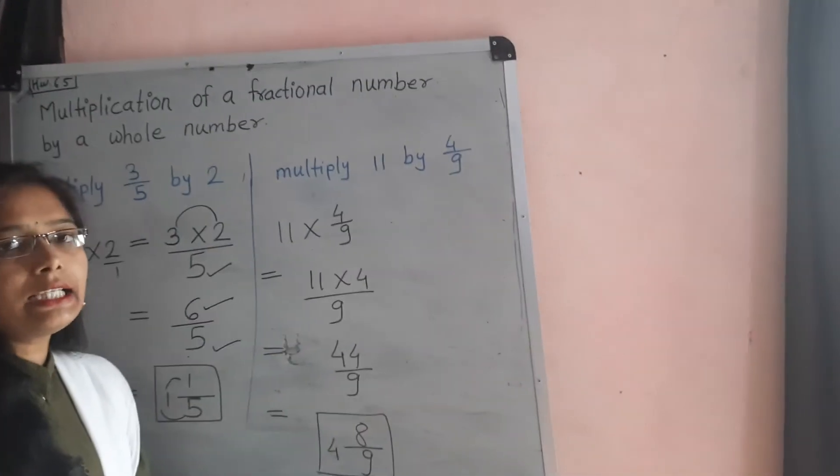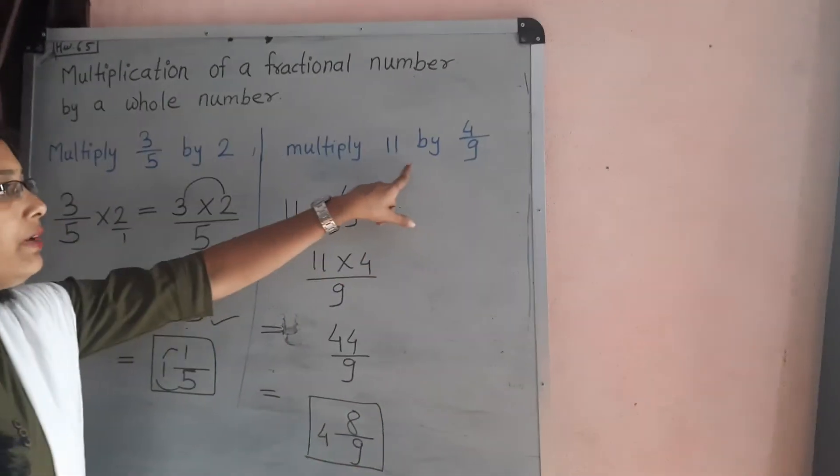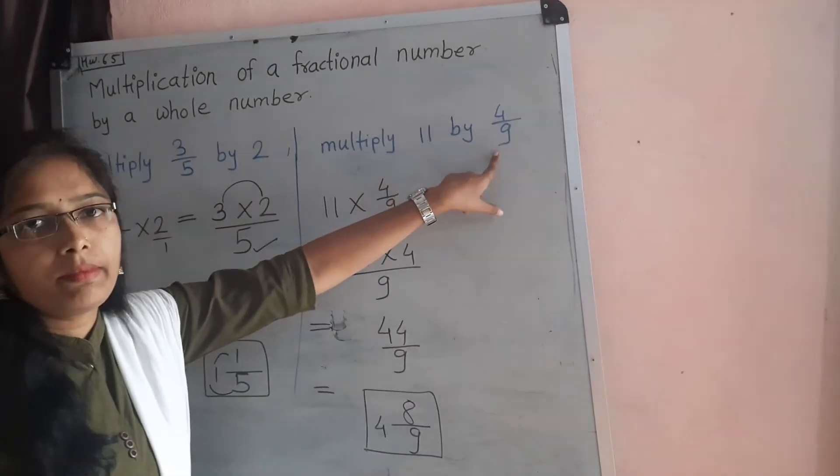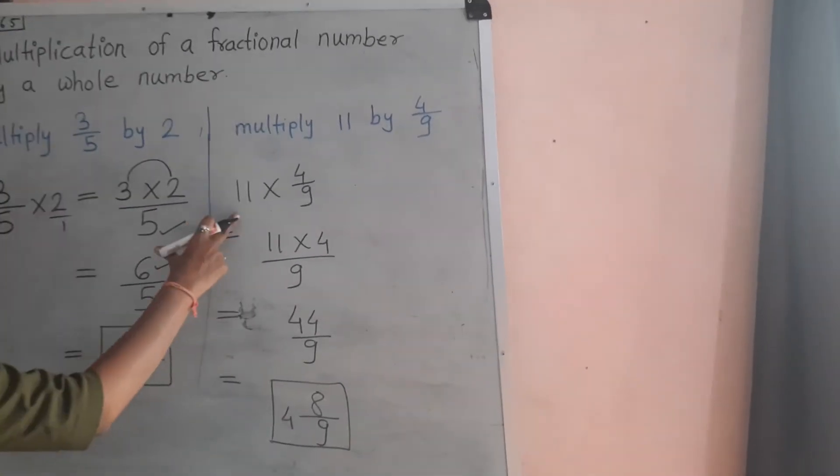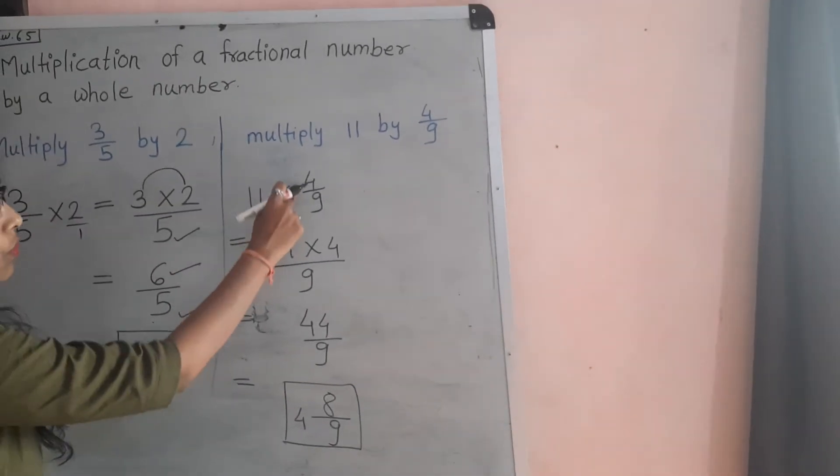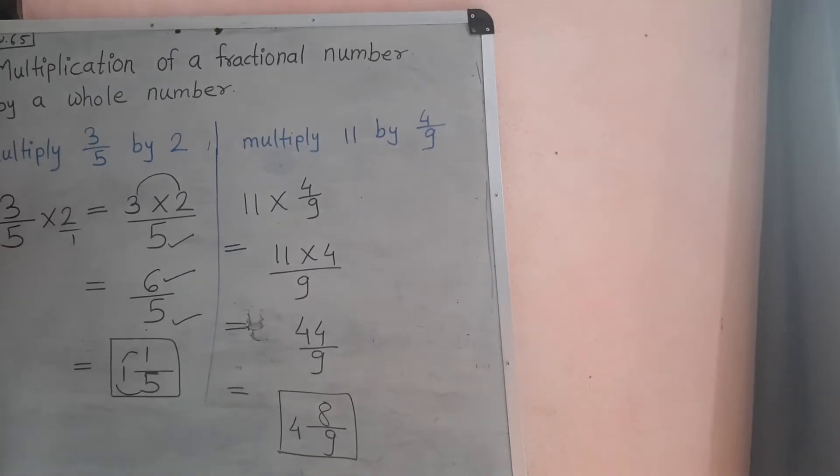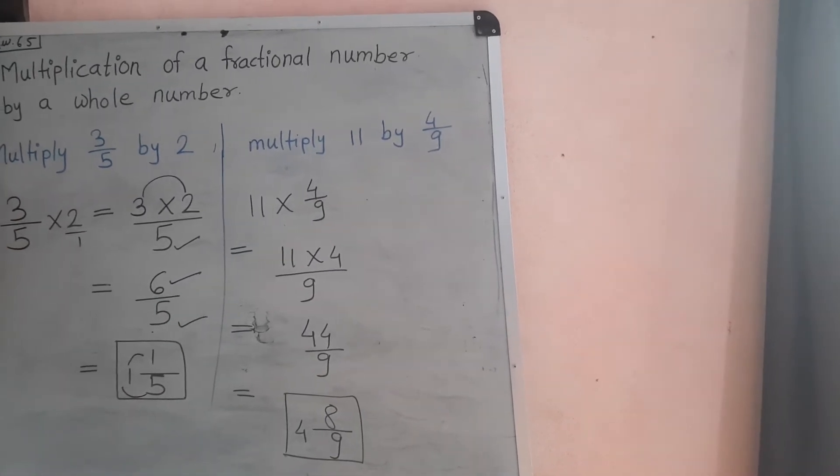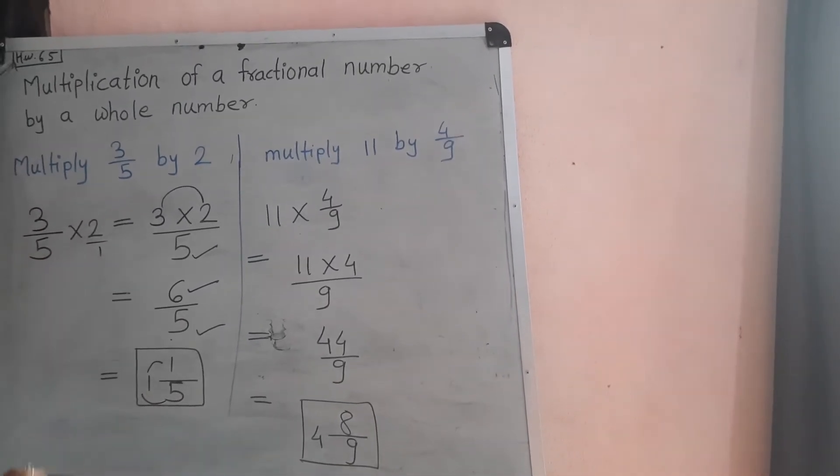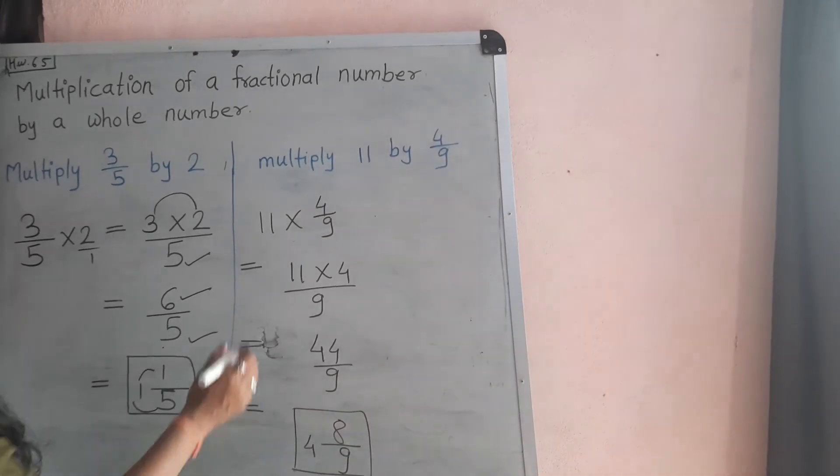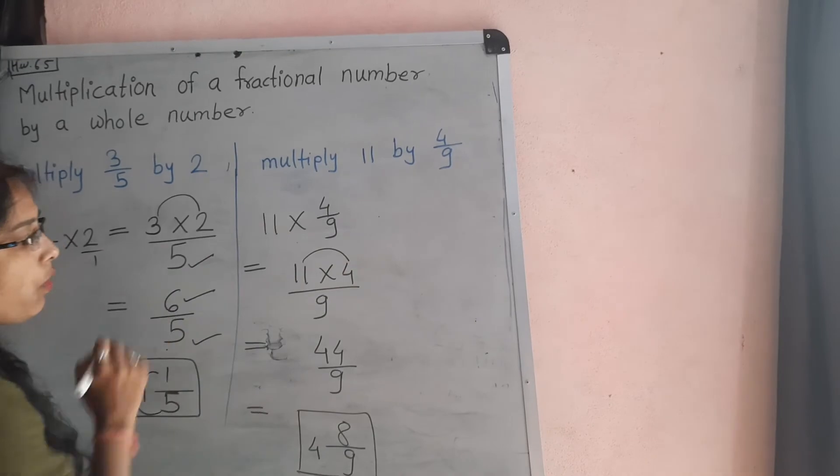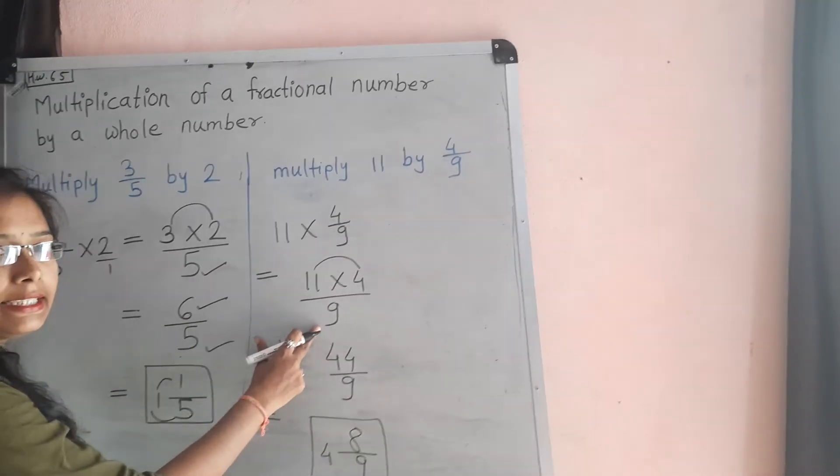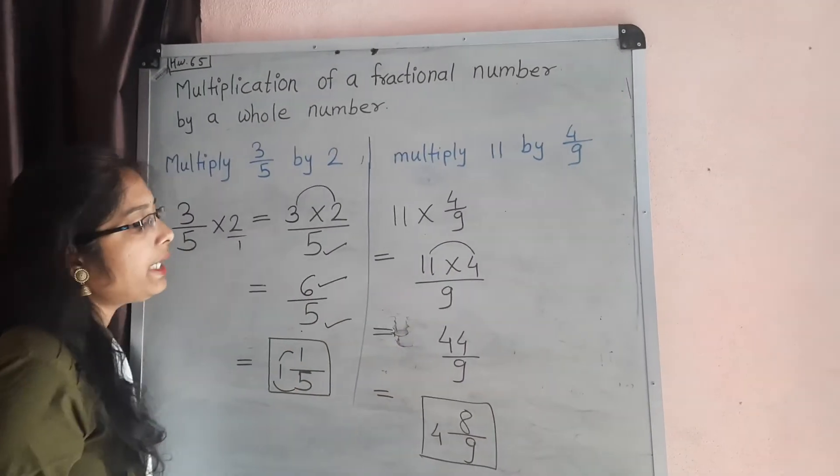Our second example is 11 multiply by 4/9. So just solve that 11 multiply 4/9. Again, we just multiply first numerator with numerator, denominator with denominator. So 11 into 4, and in denominator place there is a 9.